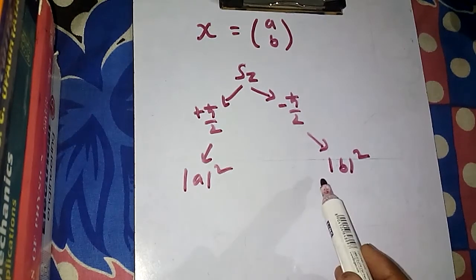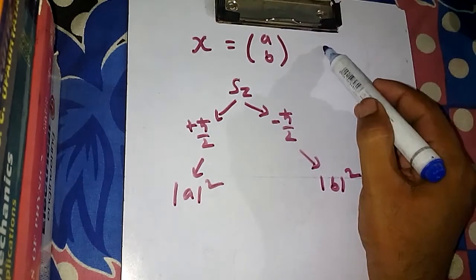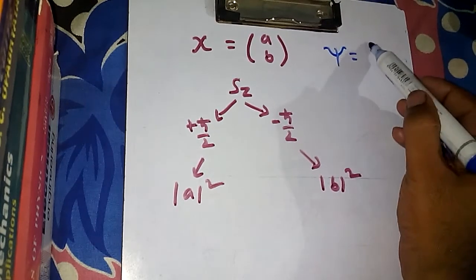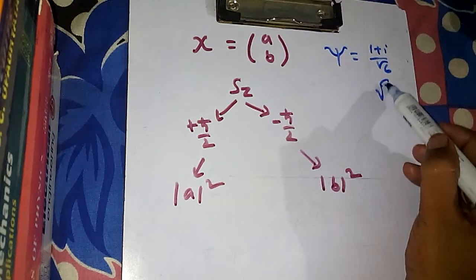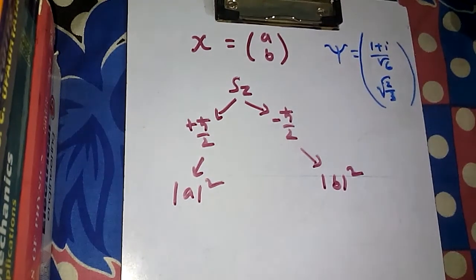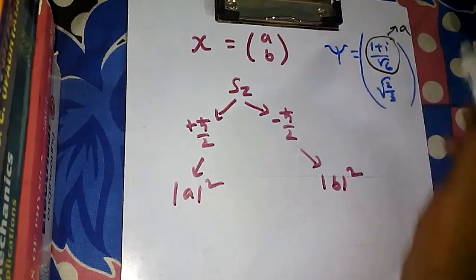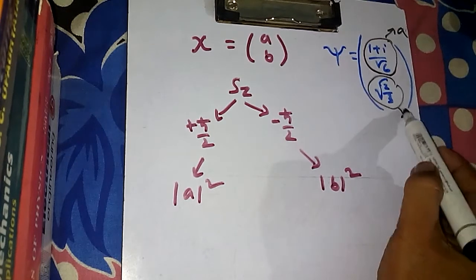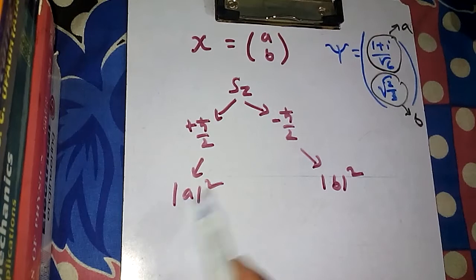We just need to find these two probabilities. Now we write down the spin function given in our problem. The function is psi = [(1+i)/√6, √(2/3)], written as a column matrix. Clearly from here you can see that the first term (1+i)/√6 is 'a', and the second term √(2/3) is 'b'.